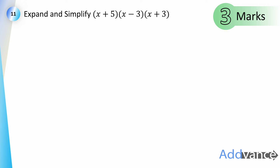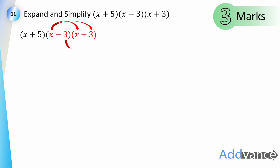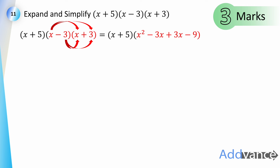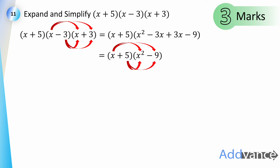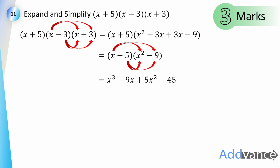Question eleven: expand and simplify (x + 5)(x − 3)(x + 3). First expand the last two brackets: (x − 3)(x + 3) = x² − 9. Now expand (x + 5)(x² − 9): multiply each term to get x³ − 9x + 5x² − 45. The final answer is x³ + 5x² − 9x − 45. That's 3 marks.